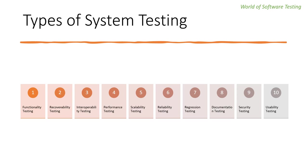The first type is functional testing — to make sure the functionality of a product works as per the requirements defined, within the capabilities of the system. The second is recovery testing — to make sure how well the system recovers from various input errors and failure situations. The third is interoperability testing — to make sure the system can operate well with third-party products. The fourth is performance testing — to assess the system's performance under various conditions. The fifth is scalability testing — to verify the system's scaling ability in terms of user scaling, geographic scaling, and resource scaling.